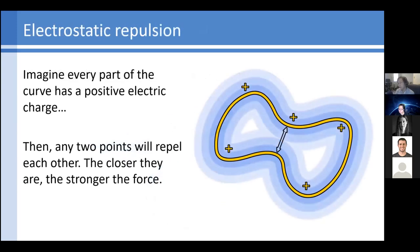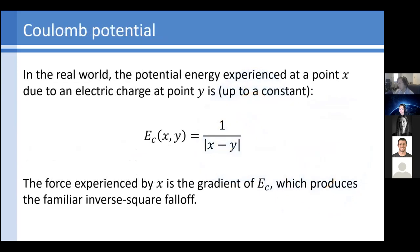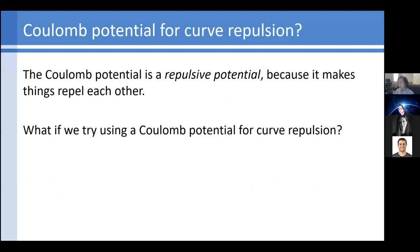Taking inspiration from the real world, we could imagine that every part of this curve has a uniform positive electric charge. We know that positive charges repel positive charges, so any two points on the curve will end up repelling each other, and the closer they are, the stronger the force. This repulsion is governed by the Coulomb potential, which looks like one over the distance. The actual force is the gradient of this potential, giving you the inverse square law from E&M class. The Coulomb potential is a repulsive potential — and that sounds a lot like what we want.